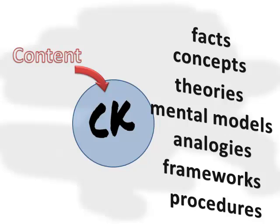In the mid-1980s, this subset of knowledge called Content Knowledge, or CK, was represented by a circle — even though we know that knowledge is not a circle. It was just a convenient way to illustrate a body of knowledge.